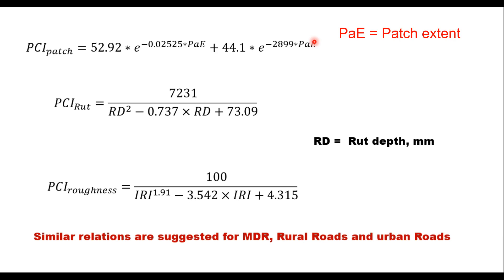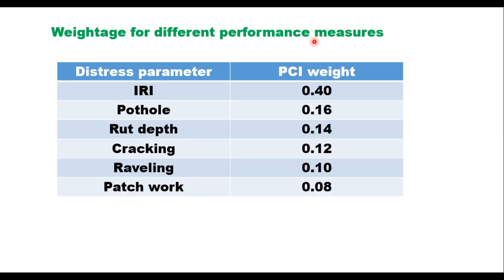Once PCI values for individual distresses are known, the weightage for different performance measures as suggested by IRC are: IRI = 0.4, potholes = 0.16, rut depth = 0.14, cracking = 0.12, raveling = 0.10, and patchwork = 0.08, giving a total of 1.0. These are applied to calculate the overall PCI for the network or road section.